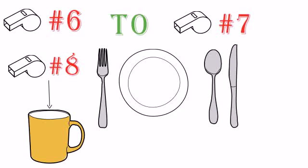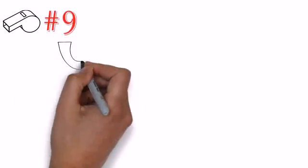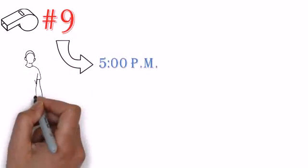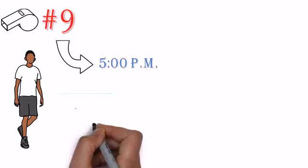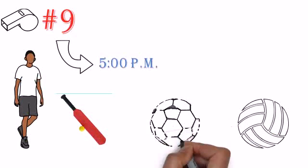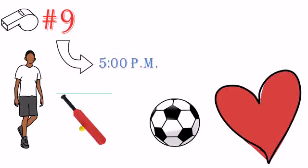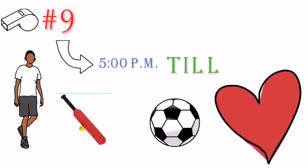As soon as we finished our tea, it was time for the 9th whistle, which was at 5pm, which indicated that it was time to move on to the playground. We played cricket, football and volleyball. I personally loved sports. So we played for 1.5 hours till 6:30pm.